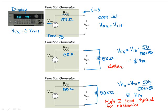So the default mode of the function generator is to display the output voltage if a 50 ohm load is connected. In the default mode, the actual output VFG is 6V RMS.